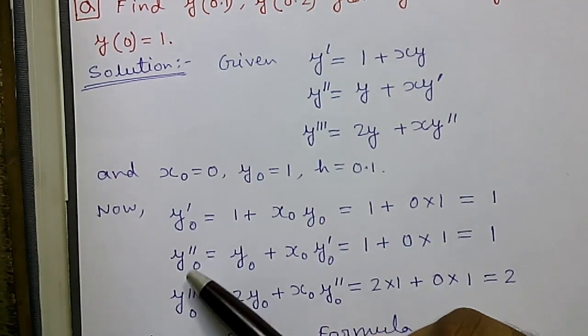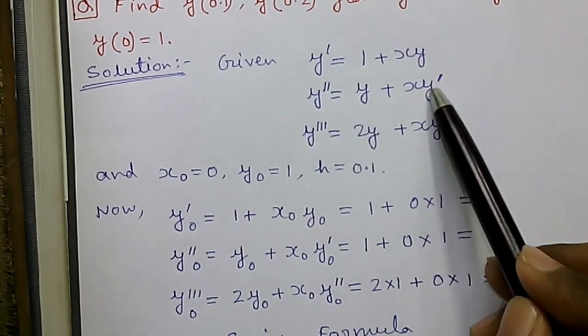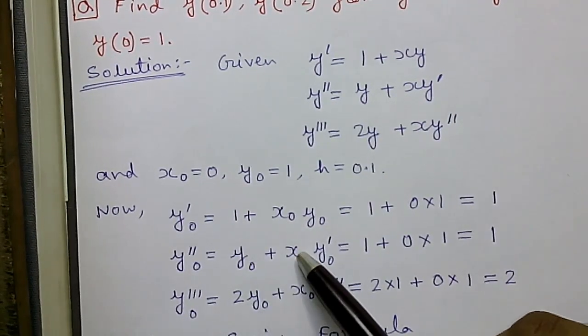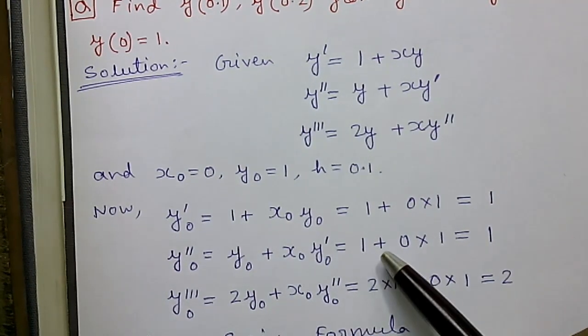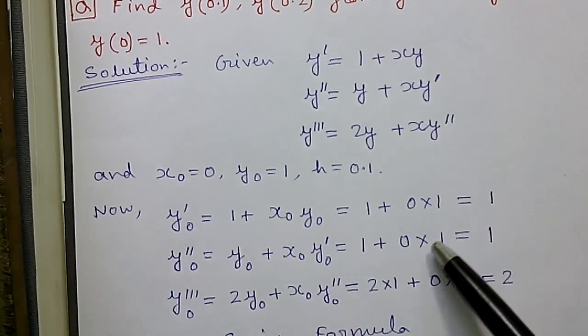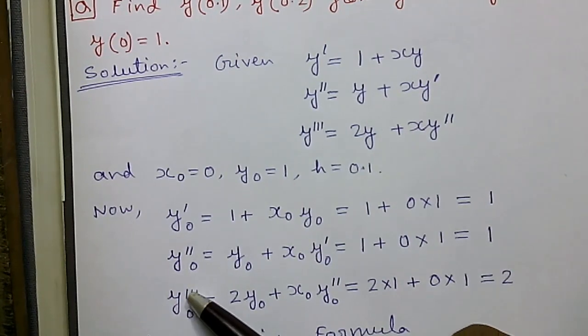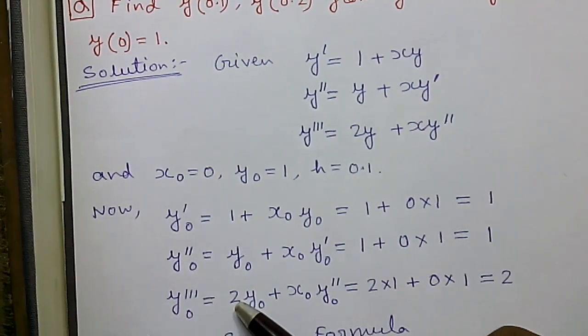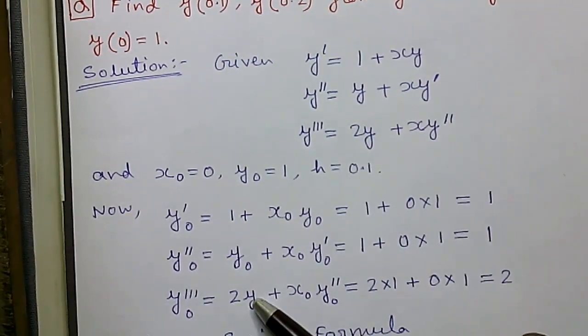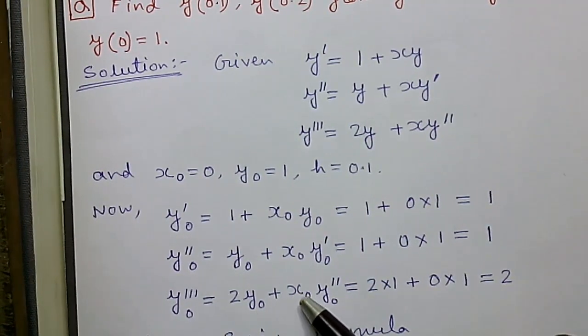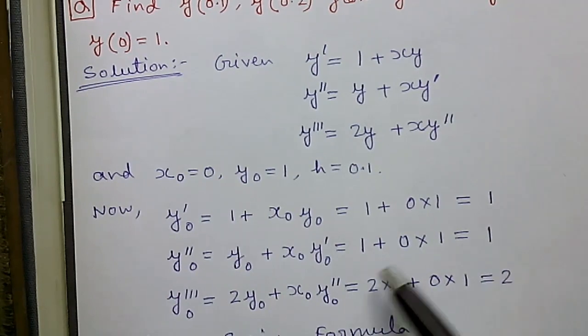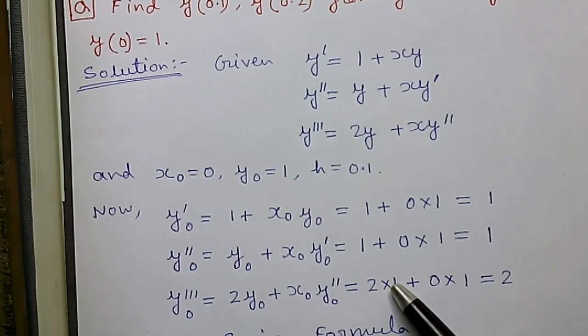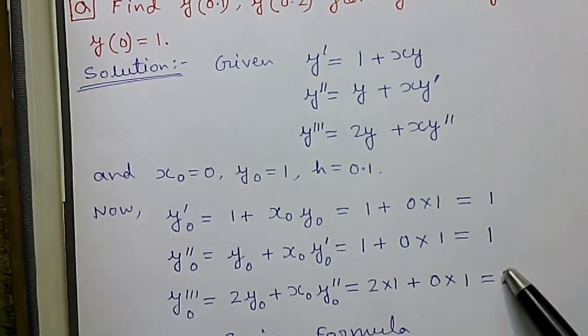Next y''0 = y0 + x0·y'0, that is 1 + 0·1 = 1. Next y'''0 = 2y0 + x0·y''0. So it will become 2·1 + 0·1 = 2.